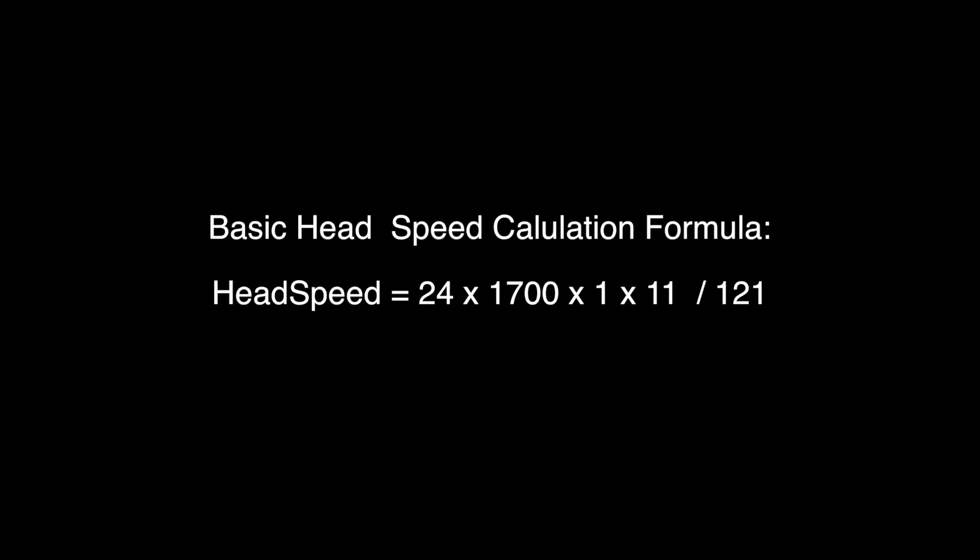So with that said, my formula would end up being head speed equals 24, that's 24 volts. I'm running a 6S pack and I have it set at 4 volts per cell. So 6 times 4 is 24 volts. That's kind of the middle of the world voltage, it's not max and it's not low voltage.